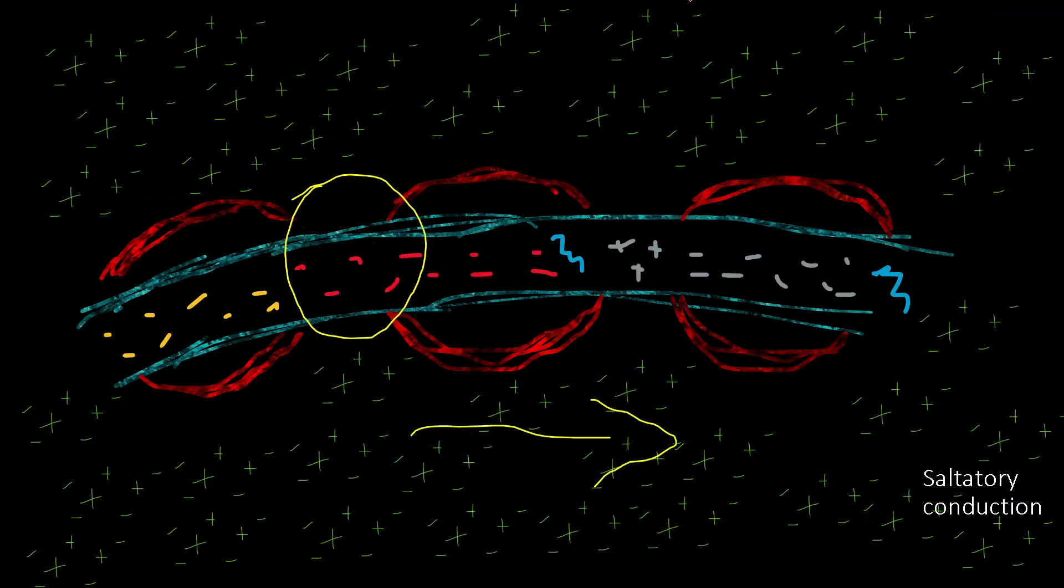And the effect is that the action potential jumps all the way to the next node without having to waste time slowly traversing through the gap in between. So we went from here all the way to here, and this phenomenon is called saltatory conduction.